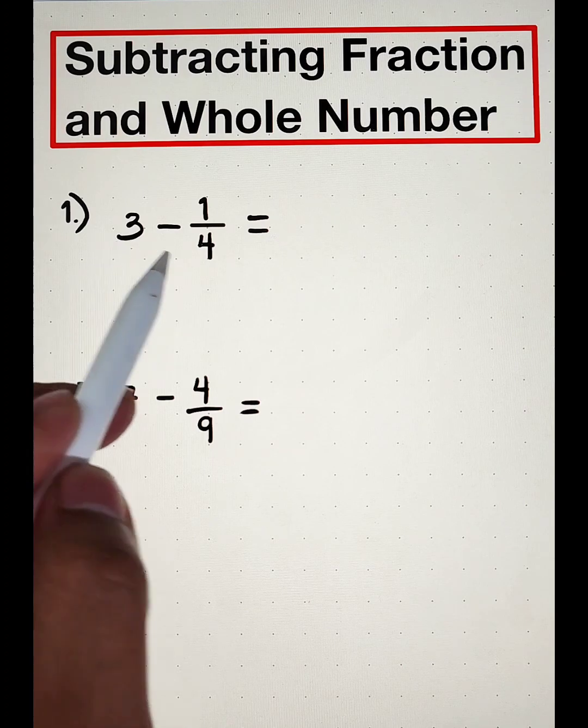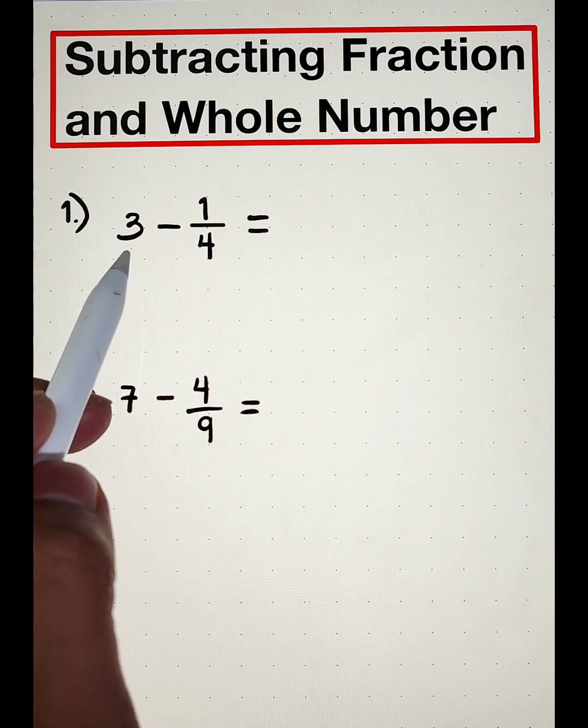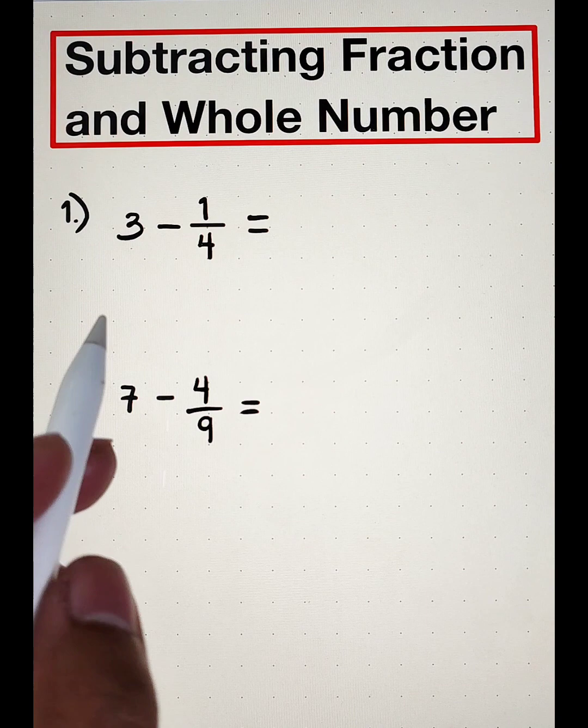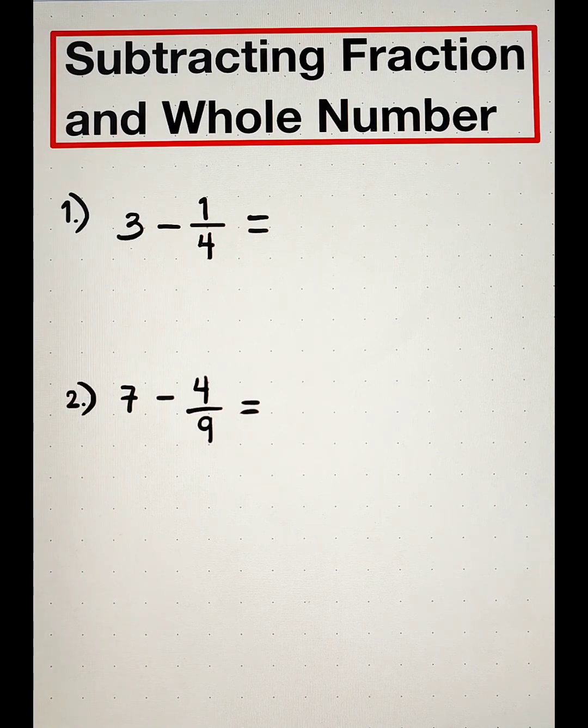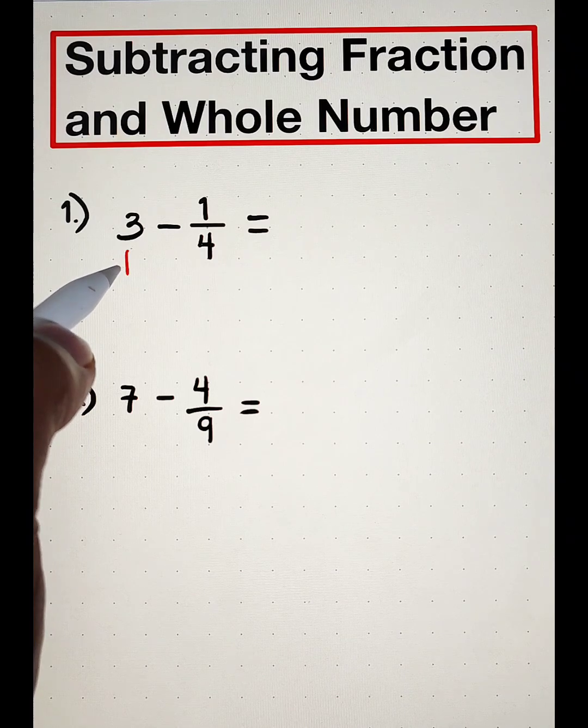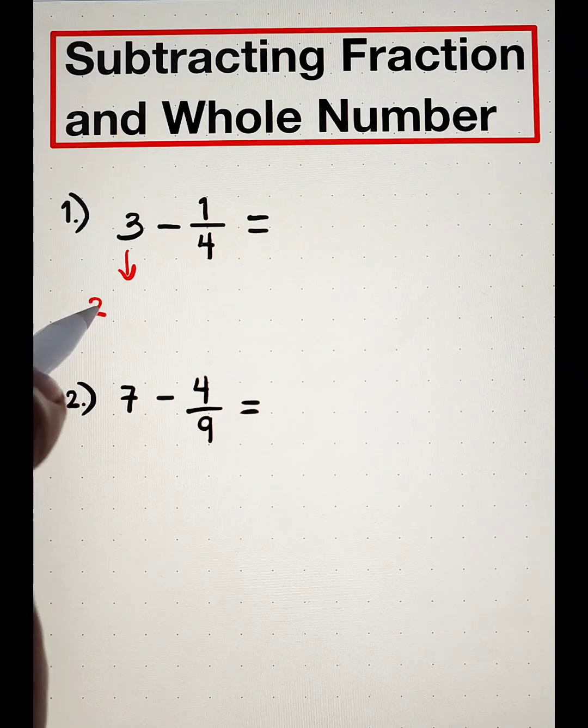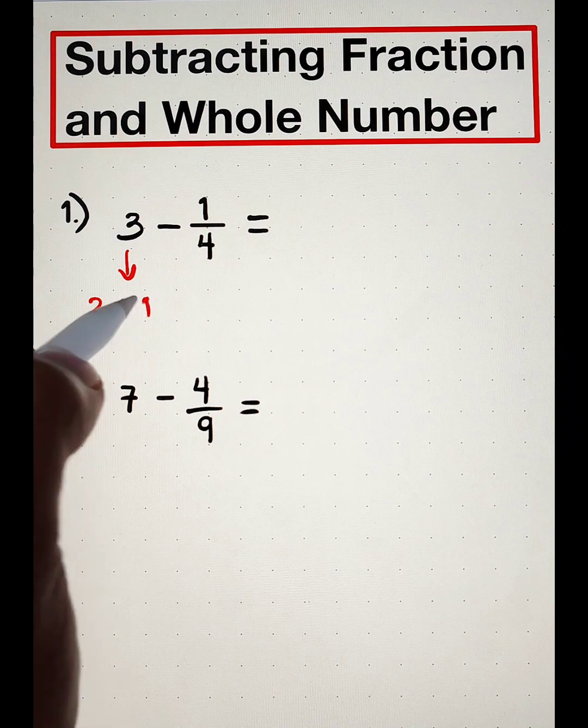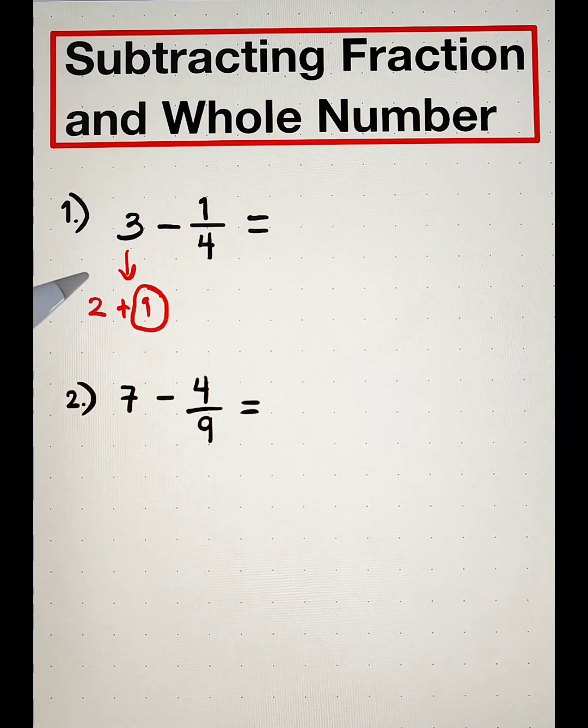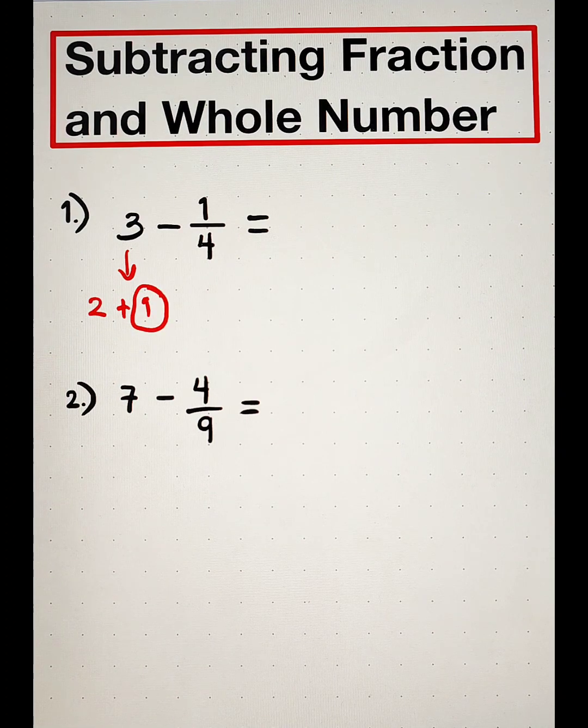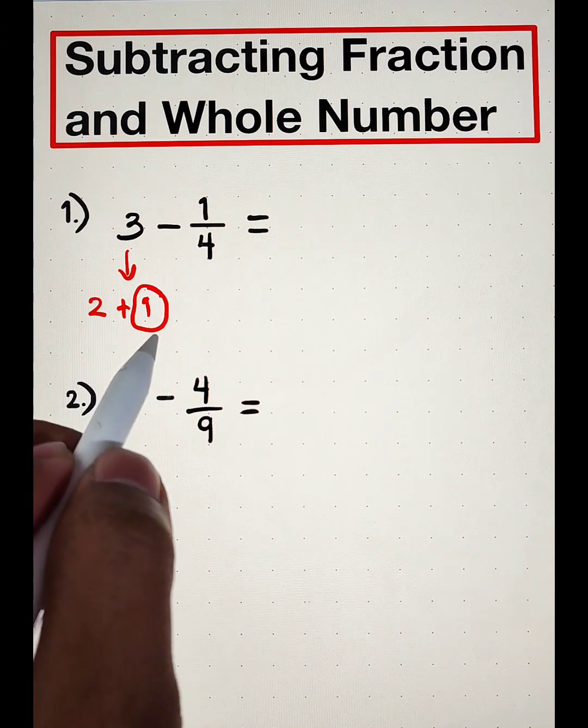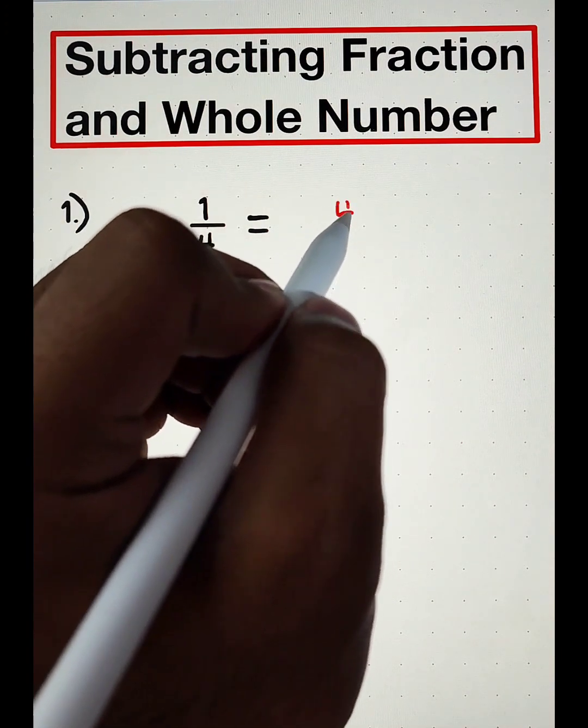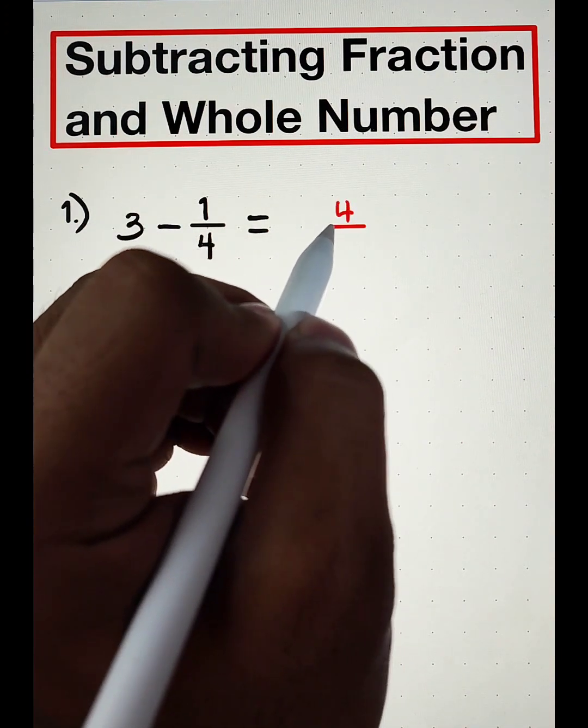But we cannot directly subtract 1 fourth from this whole number 3. So what we need to do is to break down 3 or we will borrow 1 to make it a fraction. So it goes like this. This 3 will become 2 plus 1. And this 1 is to be converted into a fraction. And it will become 4 over 4.